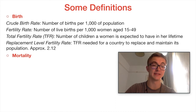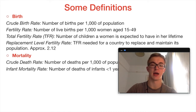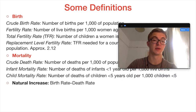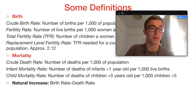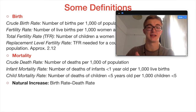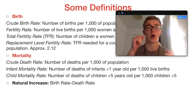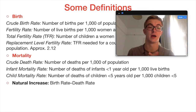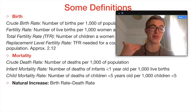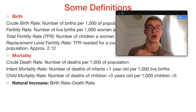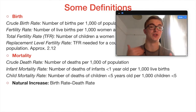Let's talk about mortality — that is, deaths. We start with crude death rate, which is the number of deaths per 1,000 of a population, much the same as crude birth rate. Beyond that, we have infant mortality rates and child mortality rates. An infant is defined as somebody under the age of one, so infant mortality rate is the number of deaths of infants below the age of one per 1,000 live births. For child mortality rate, a child is defined as someone under the age of five, and this is the number of deaths of children under five per 1,000 children under the age of five — just making sure our measurement is directly relevant to what we're trying to find out.